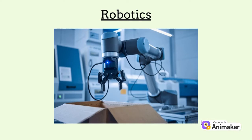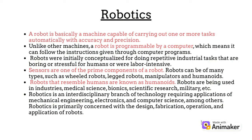Moving on to the final topic, which is Robotics. A robot is basically a machine capable of carrying out one or more tasks automatically with accuracy and precision. Unlike other machines, a robot is programmable by computer, which means it can follow the instructions given through computer programs. Robots were initially conceptualized for doing repetitive industrial tasks that are boring or stressful for humans, or were labor intensive. Sensors are one of the prime components of a robot. Robots can be of many types such as wheel robots, leg robots, manipulators and humanoids. Robots that resemble humans are known as humanoids. Robots are being used in industries, medical science, bionics, scientific research, military, etc.